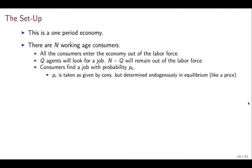All the consumers are going to enter the economy out of the labor force, so at the beginning of the day everybody's out of the labor force. The first decision people are going to make is who wants to join the labor force. Q agents will decide to go in and look for a job, and n minus Q agents will remain out of the labor force. After agents decide to join the labor force they're going to search for a job, and consumers find a job with a probability PC — PC because of consumers. PC is going to be taken as given by consumers but we're going to find it in equilibrium.